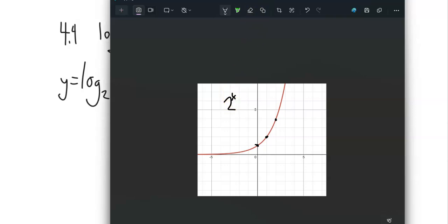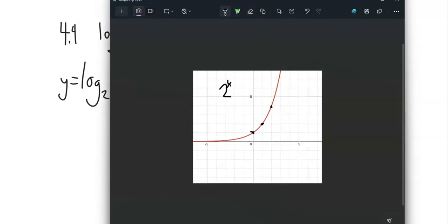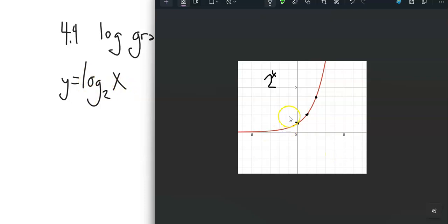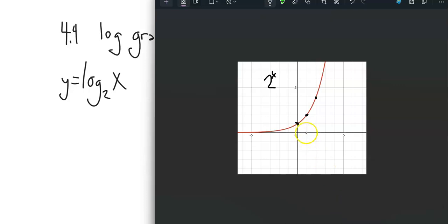Now that means that log base 2 of x is its inverse. It's the thing that undoes it. So what I should be able to do is switch the x and the y values, switch the inputs and the outputs to get a graph of that. So this point that's at (0,1) would be at (1,0), which is about here. This point that's at (1,2) should be at (2,1).